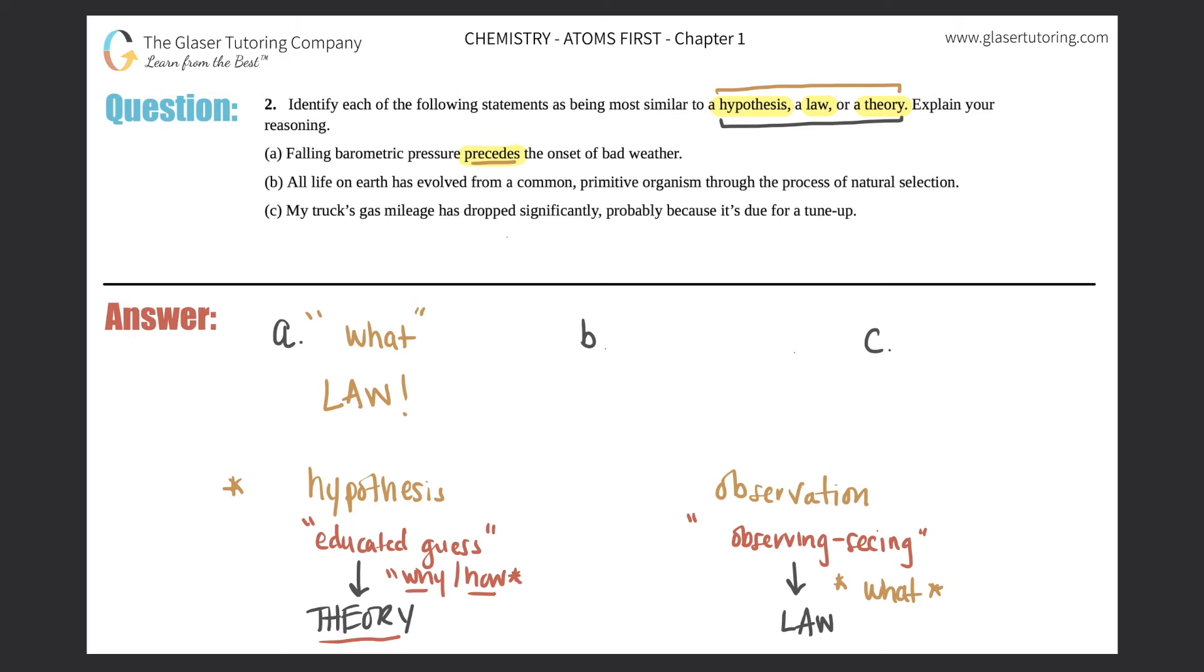B: All life on earth has evolved from a common primitive organism through the process of natural selection. What question is coming into your mind with this sentence? Well, this is a 'why' or 'how' question. The process of natural selection is this whole idea in how—see how I put that word there—how life evolved. Now this has been tested and tested and tested again, so this is a theory.